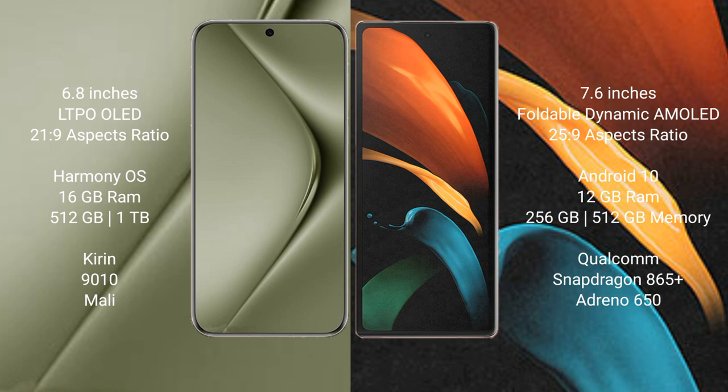Wahabepura 70 Ultra comes with 16GB RAM and 512GB or 1TB internal storage, a Kirin 9000 processor, and a Mali GPU. Samsung Galaxy Z Fold 2 comes with 12GB RAM and 256GB or 512GB internal storage, a Qualcomm Snapdragon 865 Plus processor, and an Adreno 650 GPU.